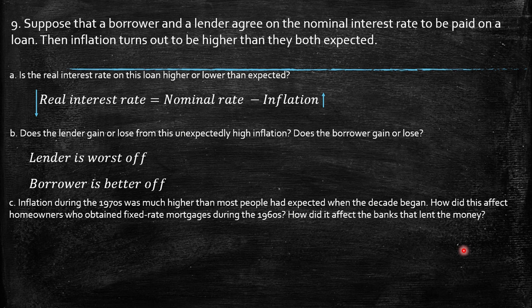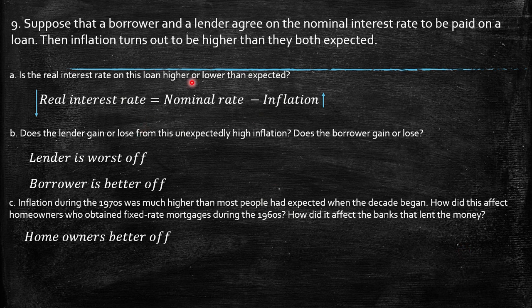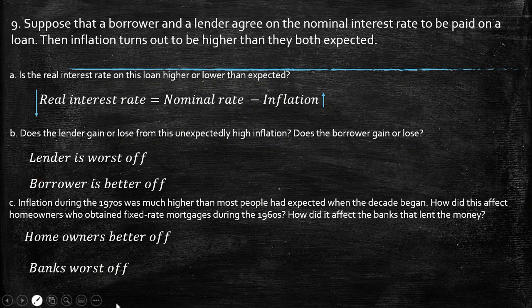Part C: Inflation during the 1970s was much higher than most people had expected when the decade began. How did this affect homeowners who obtained fixed-rate mortgages during the 1960s? How did it affect the banks that lent the money? The homeowners are better off because their nominal rate was fixed, and with inflation higher than expected, the real interest rate they were paying was lower. Contrary to that, the banks are worse off because they are receiving a lower real interest rate.